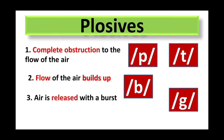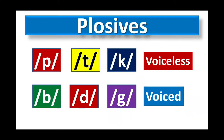This is how plosives are articulated — this is the manner of articulation for plosives. Plosives like P, T, and K are voiceless, as there is no vibration in your vocal cords when you pronounce them. But B, D, and G are voiced plosives, as there is vibration in your vocal cords when you pronounce them. If you want to know about voiced and voiceless sounds in detail, you'll find the link in the description box below, as I've already made a separate video about voiced and voiceless sounds.